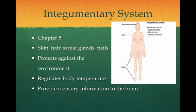The first organ system we will look at is the integumentary system, studied in Chapter 5. It includes major organs such as the skin, hair, sweat glands, and nails. It functions to protect against environmental hazards such as bacteria, chemicals, and extreme temperature changes. It also helps to regulate body temperature and provide sensory information to the brain.